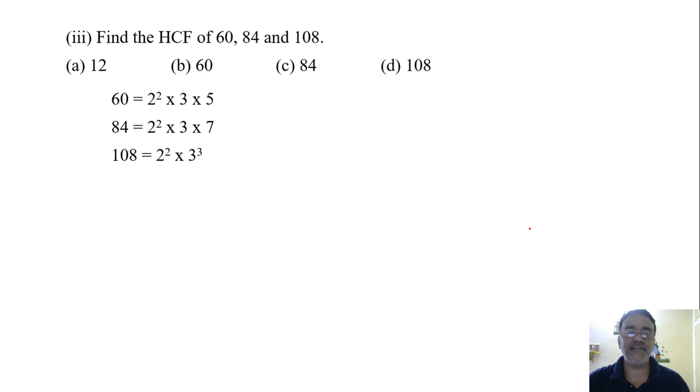The least power of 2 is 2². The least power of 3 is 3¹. So HCF = 2² × 3¹. The final answer is 12. Which option is correct? A.